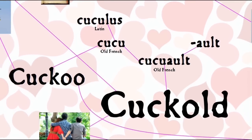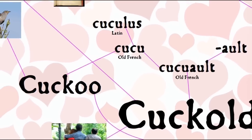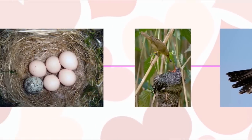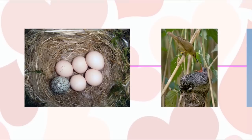The perhaps surprising etymology of the word arises from a long-standing knowledge of natural science. Cuckold is from the name of the cuckoo bird, with the addition of a pejorative suffix. Many species of cuckoo birds practice what's called brood parasitism, laying their eggs in the nests of other birds so that those other birds have to do all the work of raising the chicks.